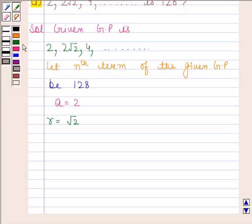We know that general term of a geometric progression is given by Tn is equal to A into R to the power n minus 1. Now here we have assumed that nth term of the given GP is 128. This implies Tn is equal to 128.